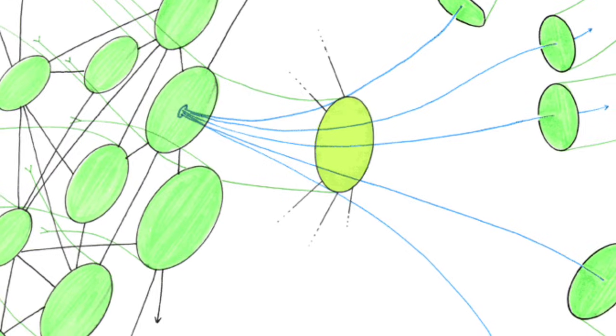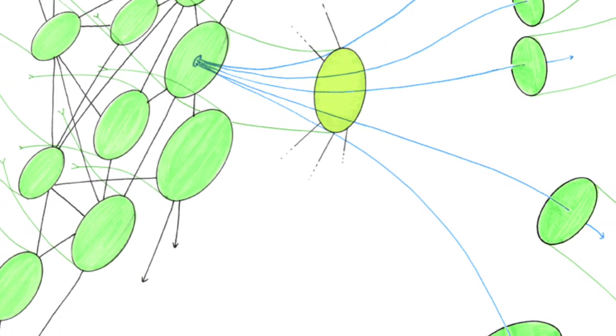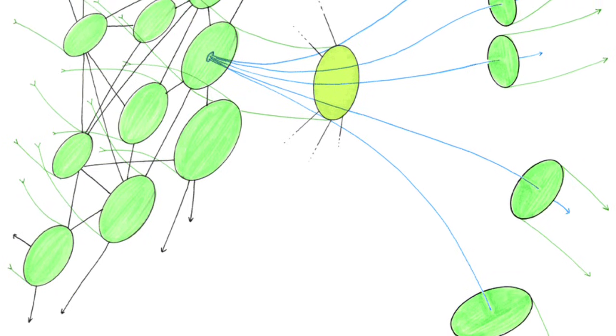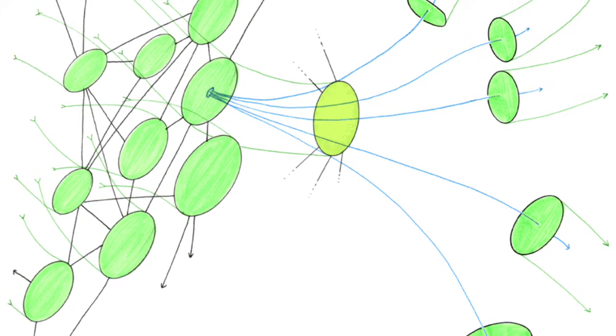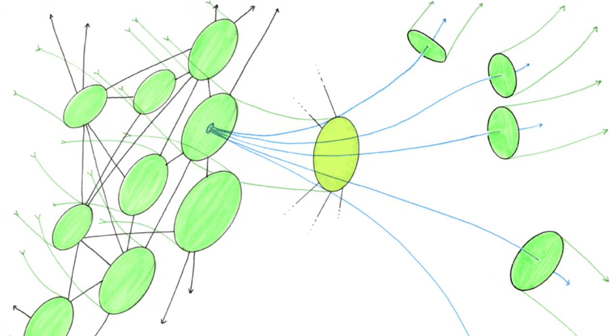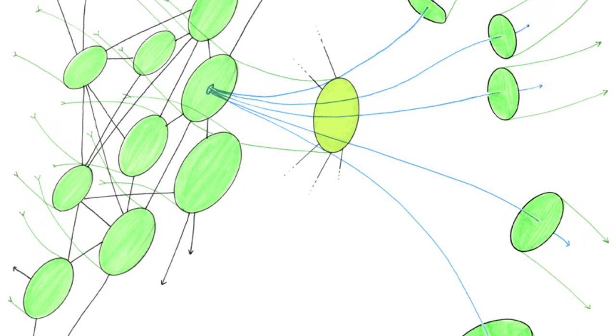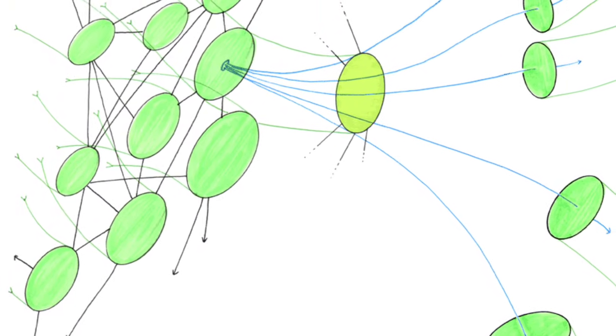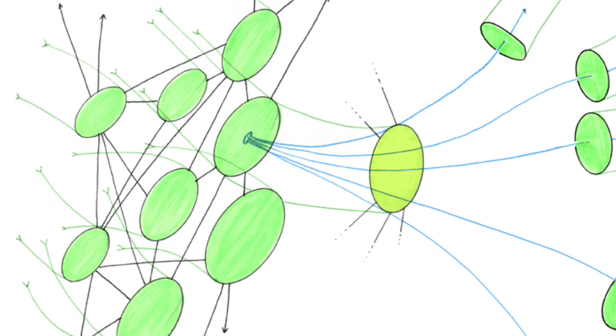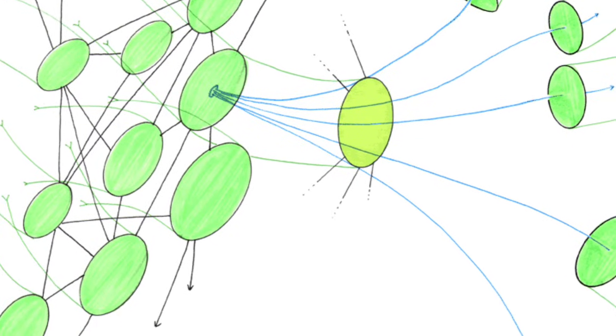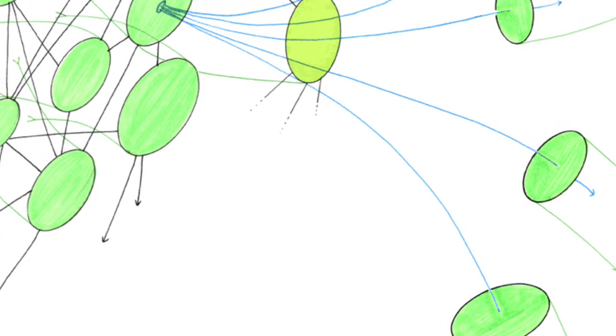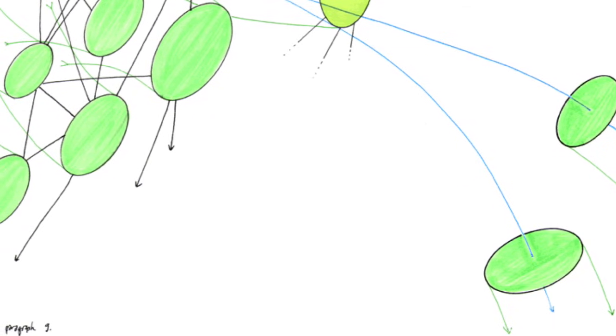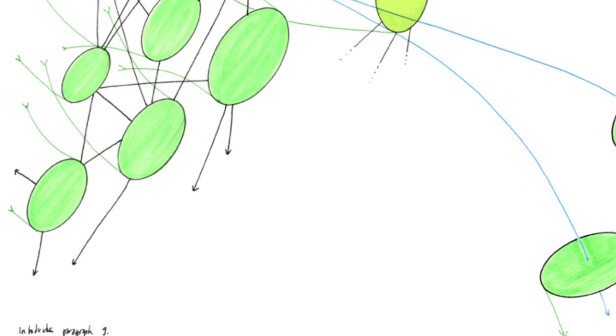4. Principle of a-signifying rupture. Against the over-signifying breaks separating structures or cutting across a single structure. A rhizome may be broken, shattered at a given spot, but it will start up again on one of its old lines, or on new lines. You can never get rid of ants because they form an animal rhizome that can rebound time and again after most of it has been destroyed. Every rhizome contains lines of segmentarity according to which it is stratified, territorialized, organized, signified, attributed, etc., as well as lines of deterritorialization down which it constantly flees. There is a rupture in the rhizome whenever segmentarity lines explode into a line of flight, but then the line of flight is part of the rhizome. These lines always tie back to one another.